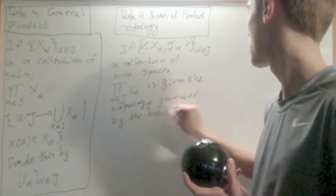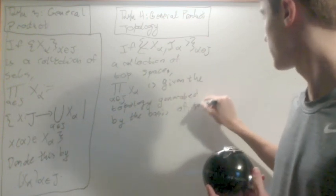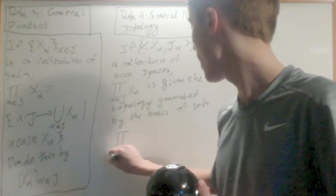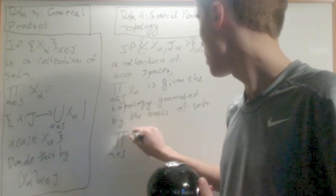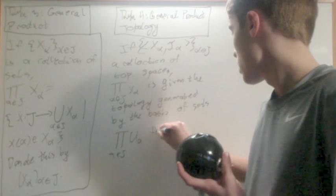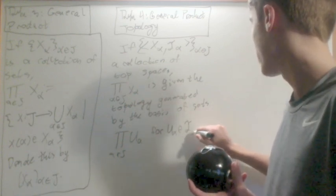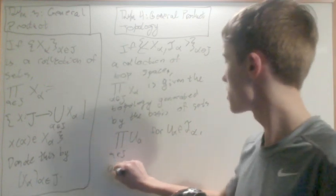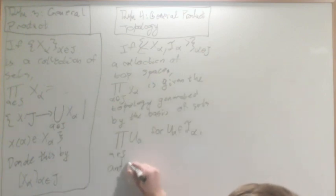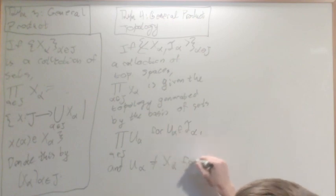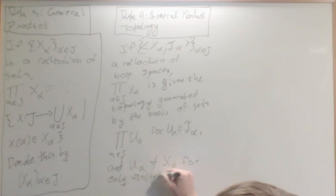Of sets, the product for alpha in J of u alpha, for u alpha element of t alpha.